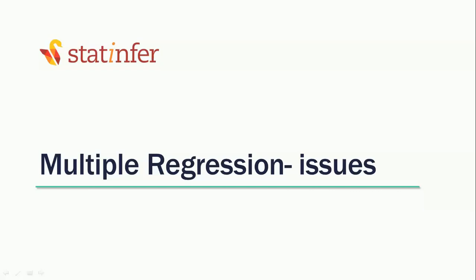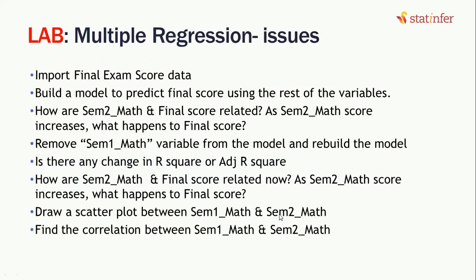Issues with multiple regression. So far we found one issue with multiple regression which was the R-squared value, which we solved by getting something called adjusted R-squared, penalizing our model with each variable we additionally add. But there is one more issue that we will try to understand.